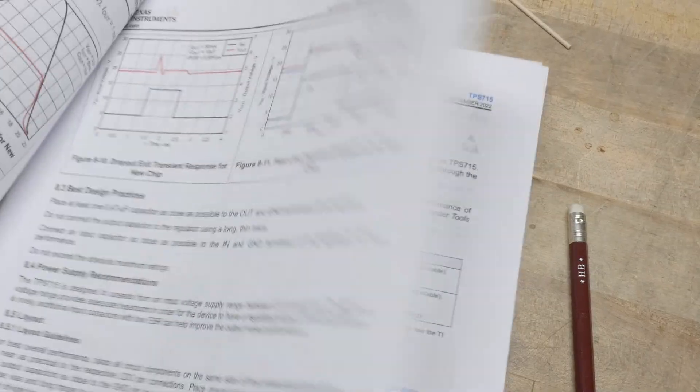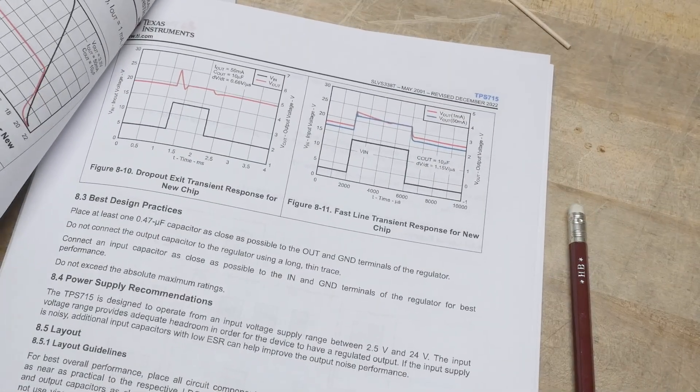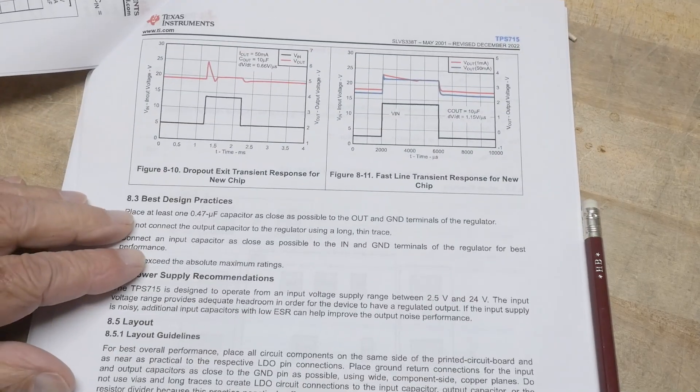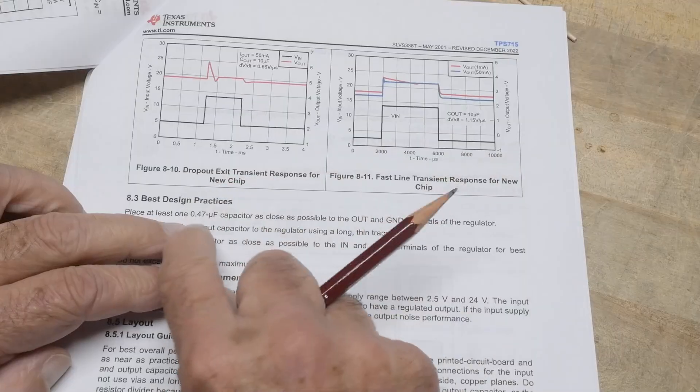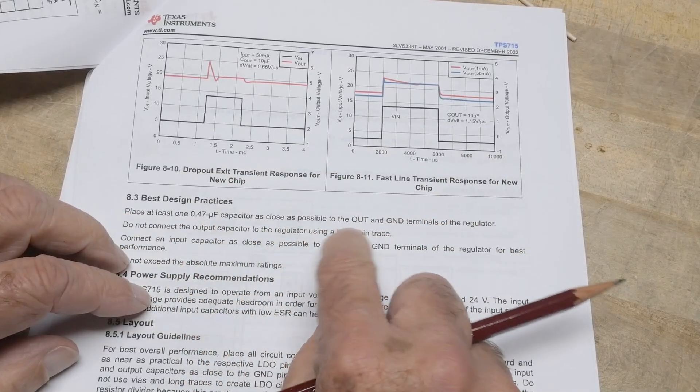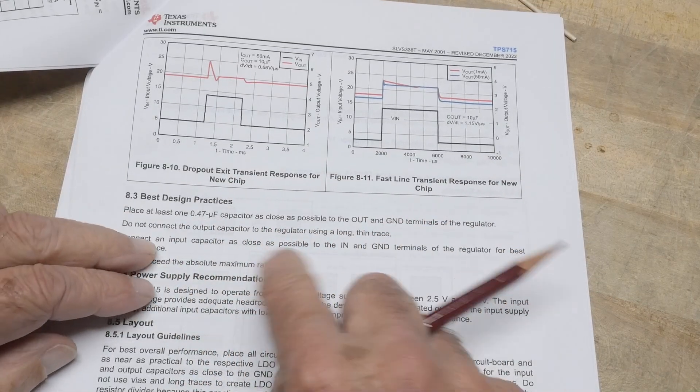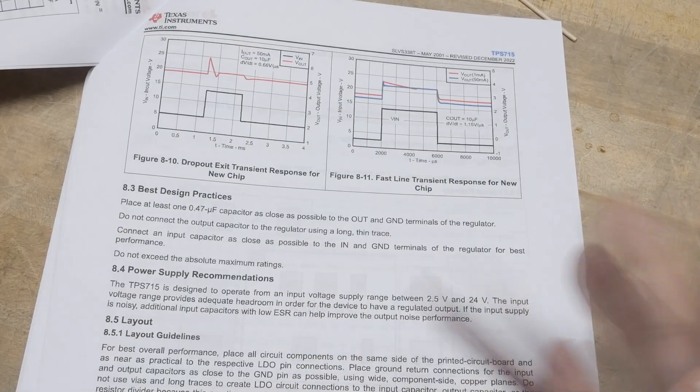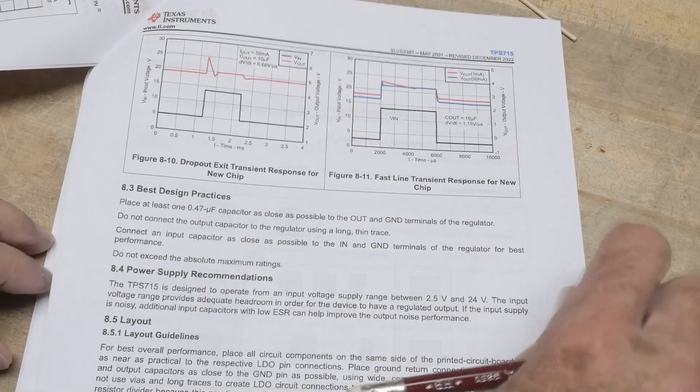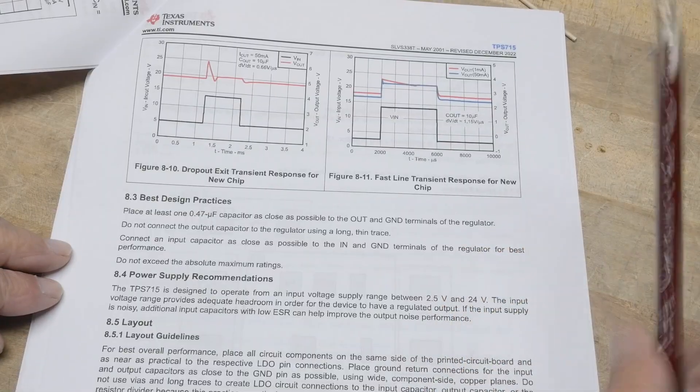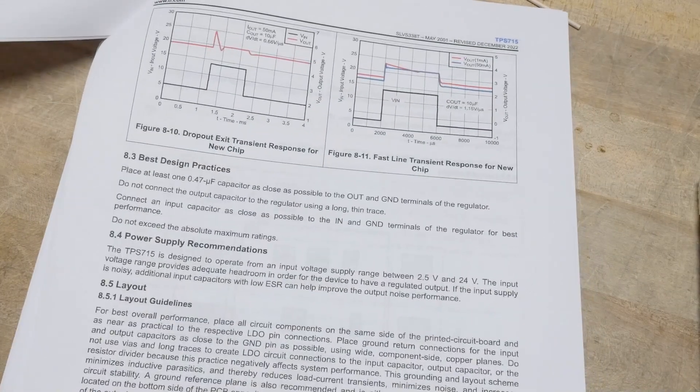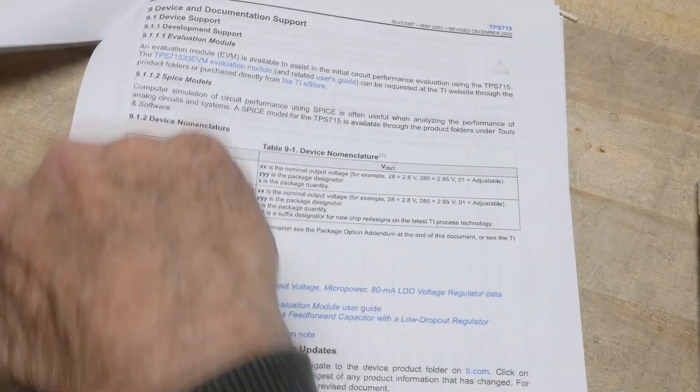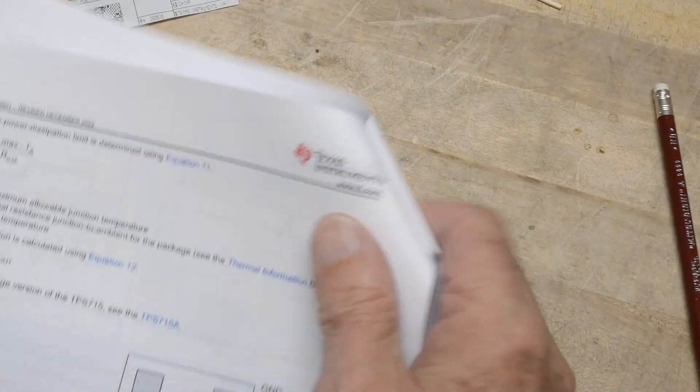All right. Anyway, I always encourage people to go through the datasheets. Here we go. Best practices. Place at least one 0.47 capacitor as close as possible to the output. Do not connect the output transistor to the regulator using a long, thin trace. Yeah. Keep your impedance down. All right. Oh. Even the layout suggestions.